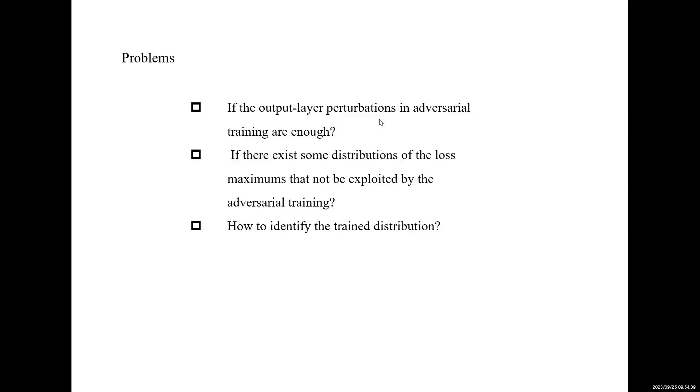Therefore, in order to handle this mystery, we have three questions about the sampling procedure in AT. First, are the output layer perturbations in adversarial training enough? Second, do there exist some distributions of the loss maximums that are not exploited by adversarial training? And last, how to identify the trained distribution?